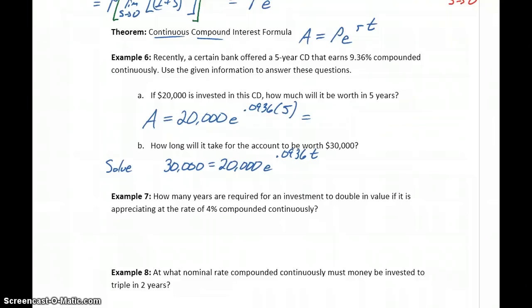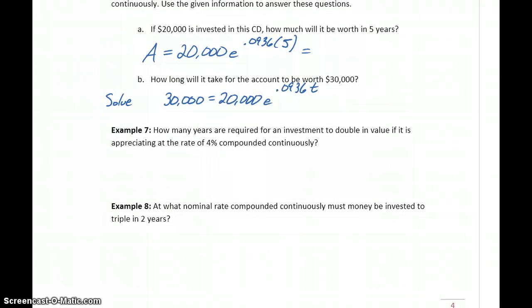So we'll come back to Wolfram Alpha to look at how we would solve that type of problem, and look at setting up questions 7 and 8. So in example 7, how many years are required for an investment to double if it's appreciating at a rate of 4% compounded continuously?